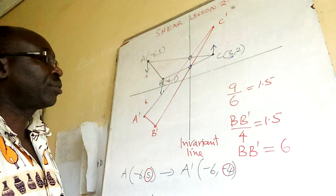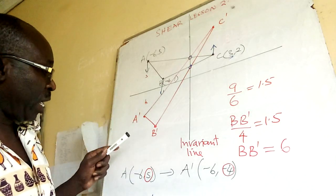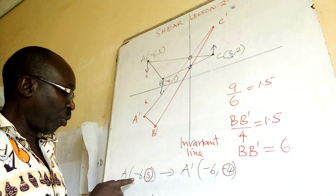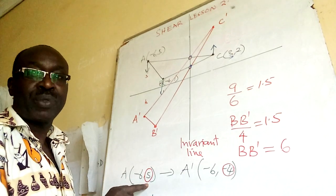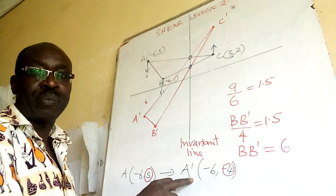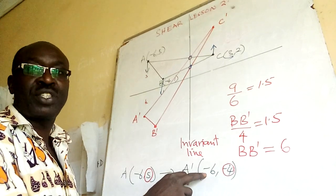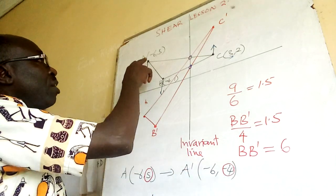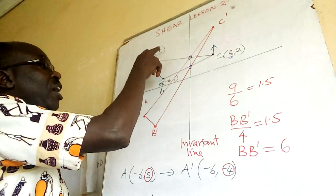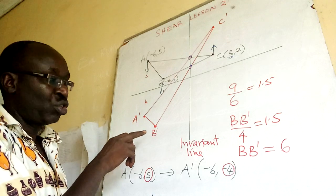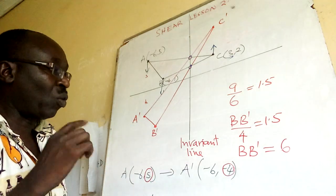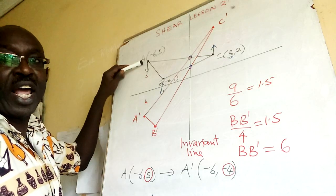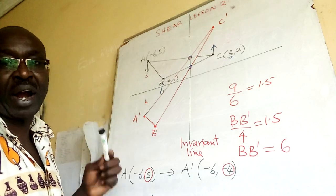Point A is at negative six, five going to A prime which is negative six, negative four. We have A at negative six, five going to A prime. Now what do we get from A to A prime?